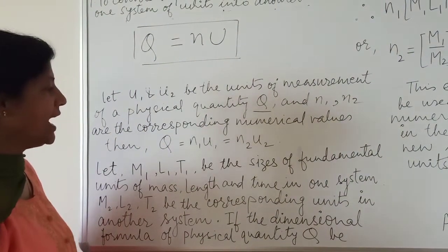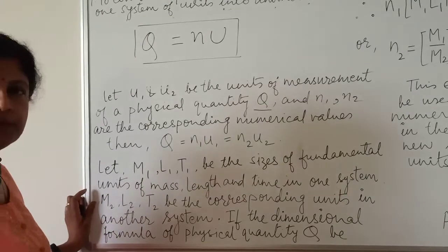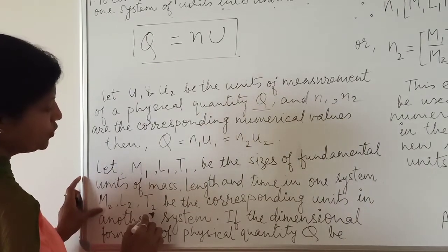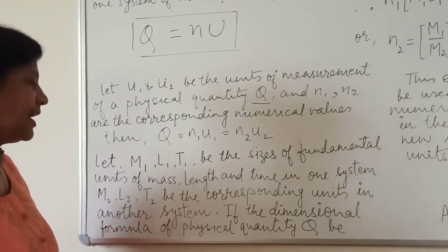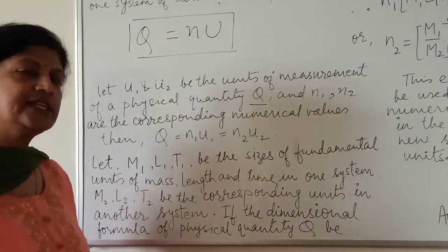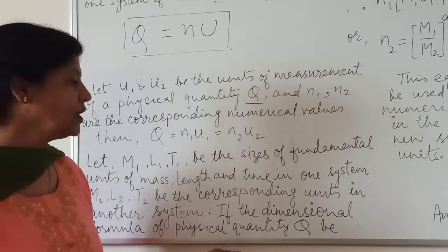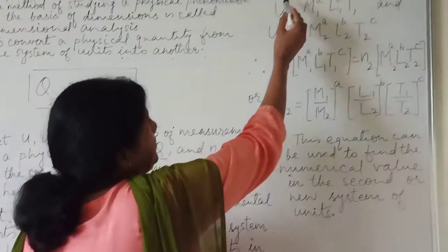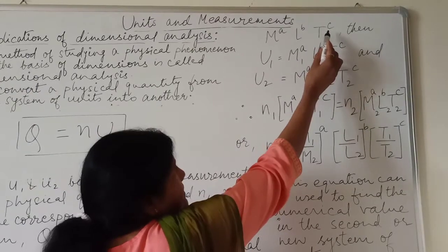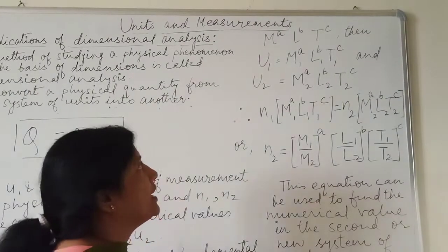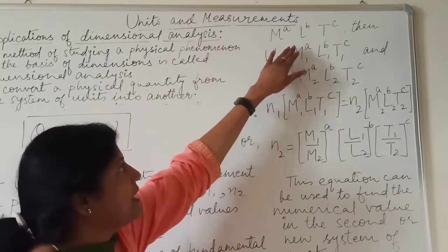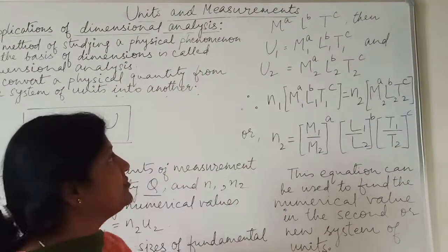And M₂, L₂, T₂ be the corresponding units in another system. If the dimensional formula of physical quantity Q be M^A L^B T^C, where A, B, C are powers of M, L, T respectively.